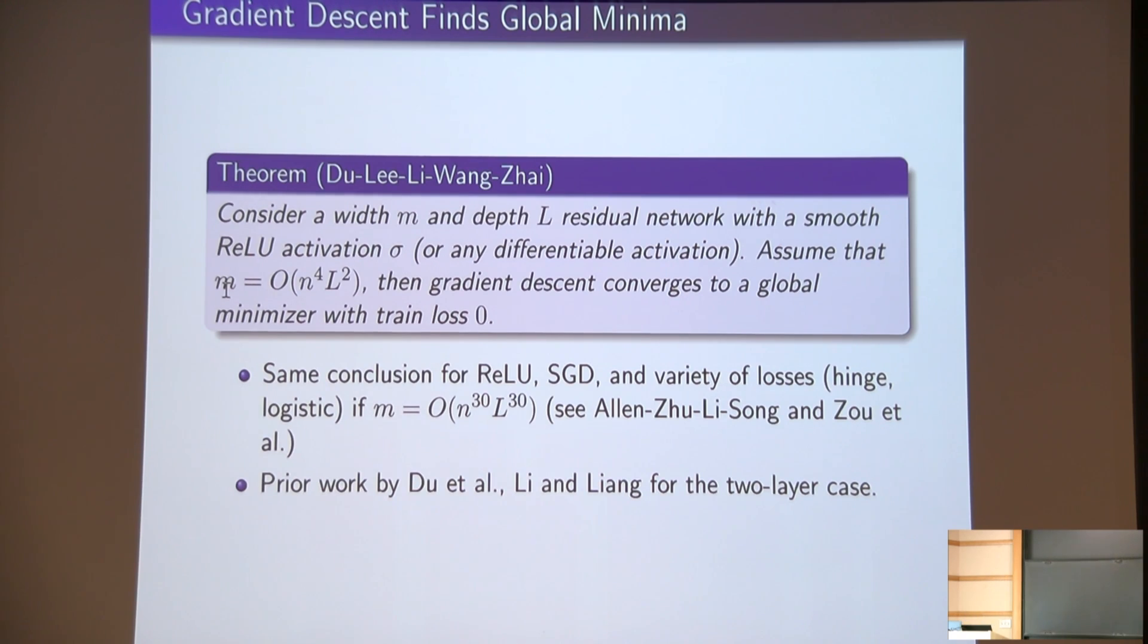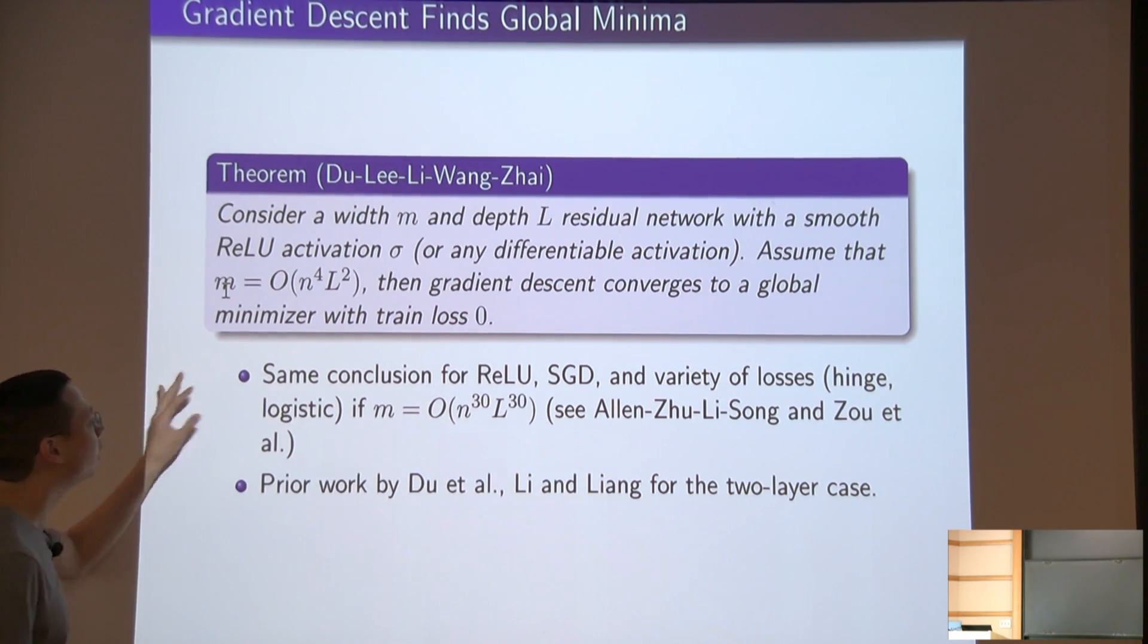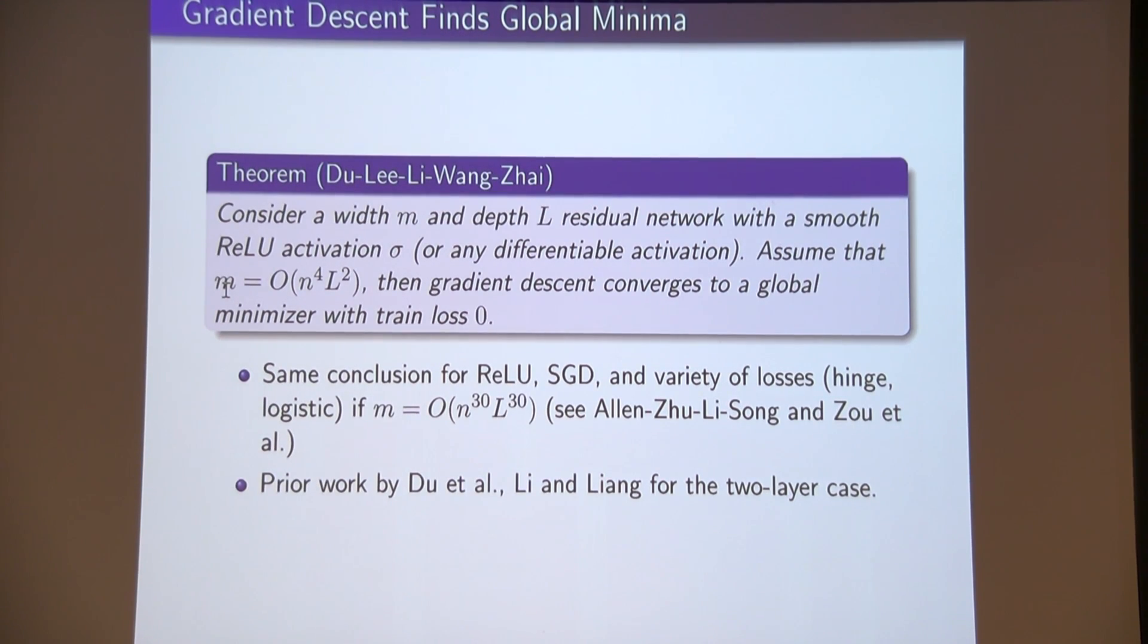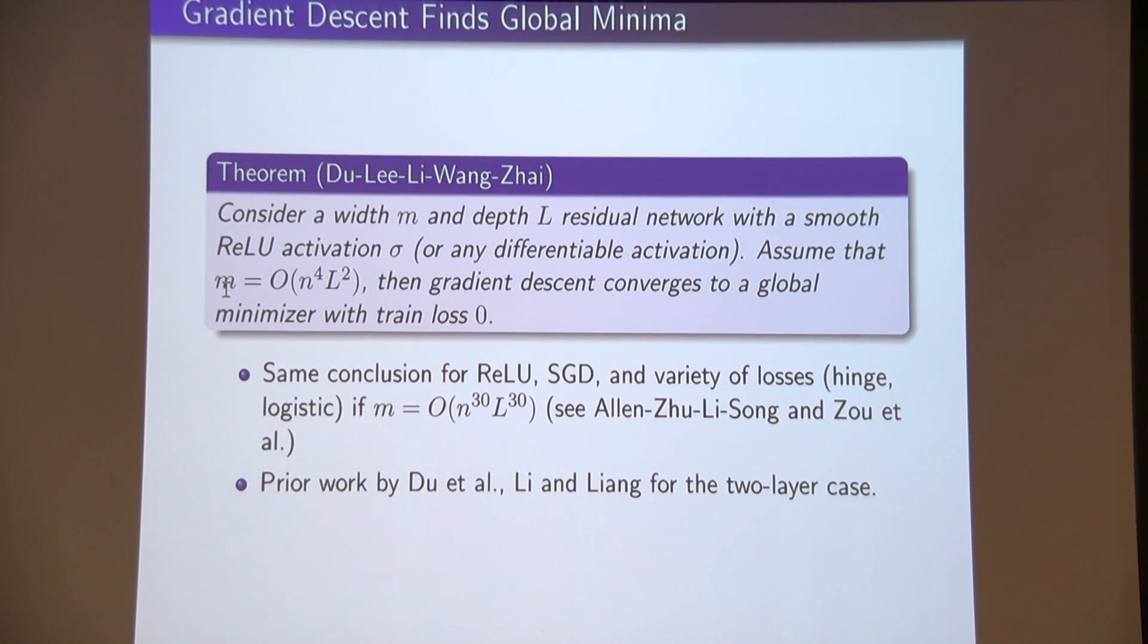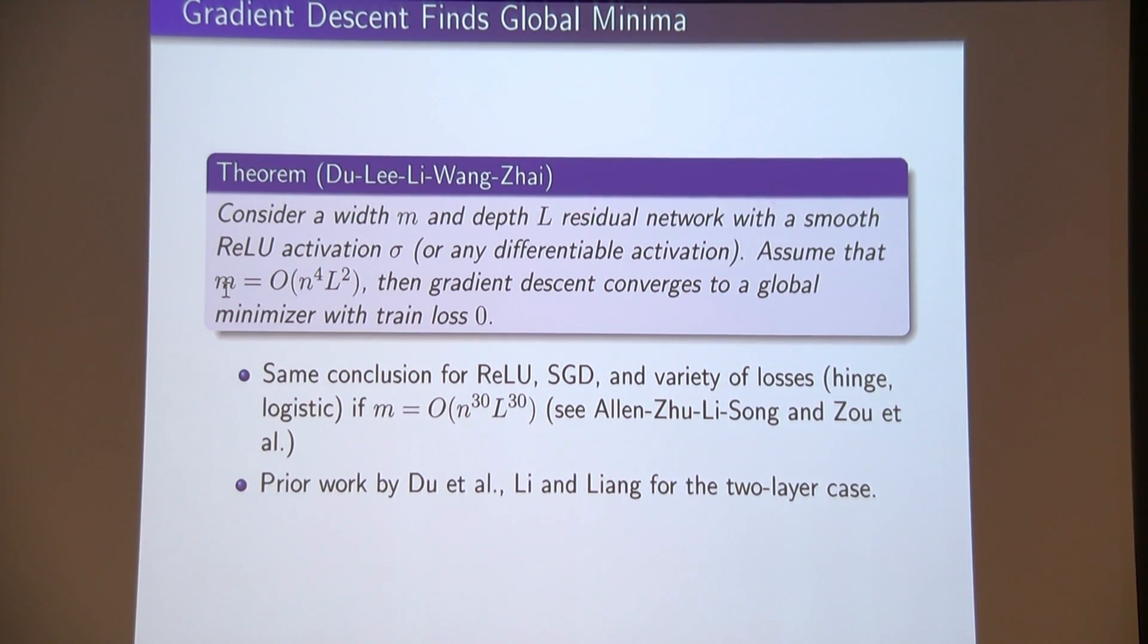You can see the same conclusion in concurrent work by many authors. The same thing holds for almost any activation, any variant of gradient descent, any loss you want, as long as the loss is convex in the output of the network. It is not convex in the parameters that we train on. Logistic loss, hinge loss, smooth hinge loss, multi-class logistic loss, whatever you want. They're all convex. It's convex in the output of the network. You cannot minimize over the output of the network. You have to minimize the parameters. It's non-convex in the parameters of the network.